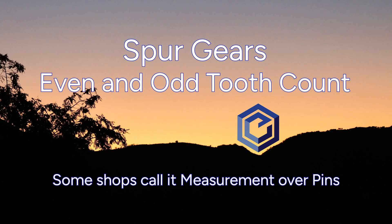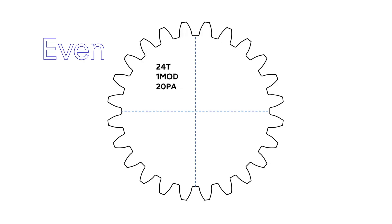Check out our calculator for spur helical even and odd tooth gear count gears. If you've got an even tooth, measure right across the teeth. Easy.